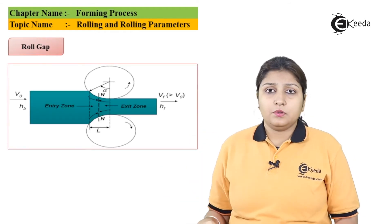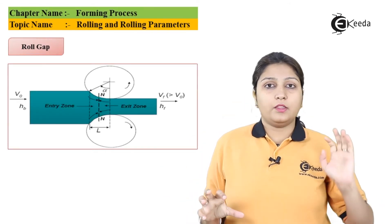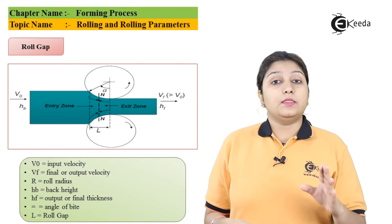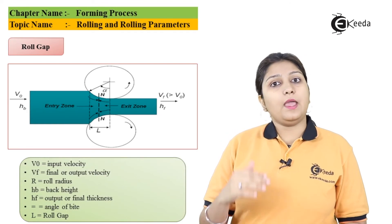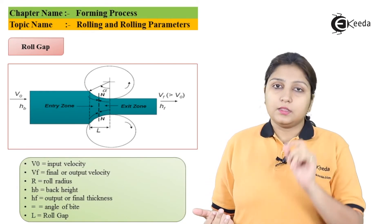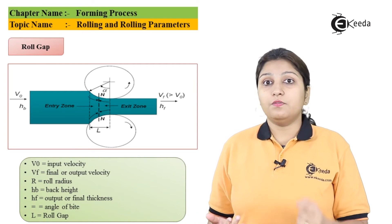So I'll talk about roll gaps. Can you see the two rollers and the object which is passing through the rollers? There is an entry zone, there is an exit zone. So between that, there can be a roll gap which is formed.